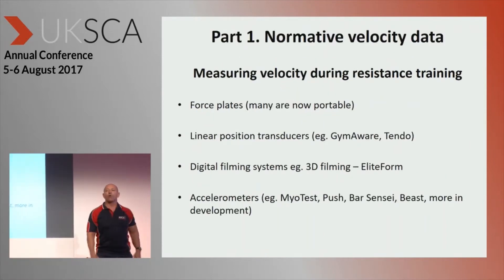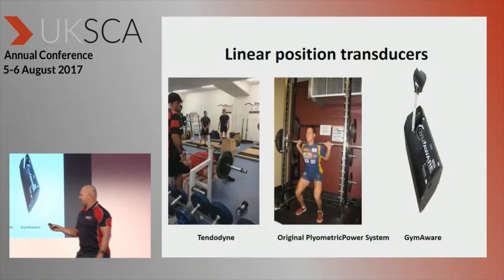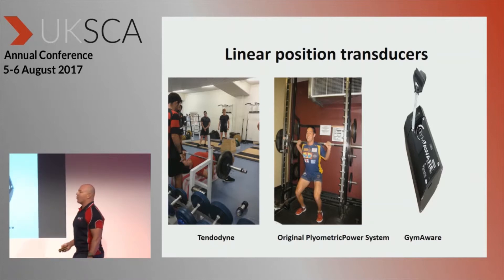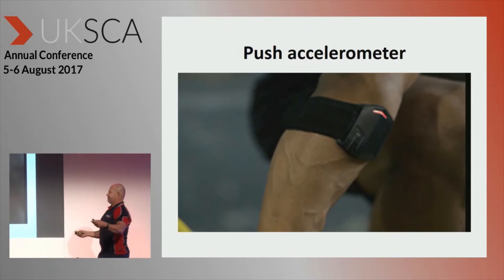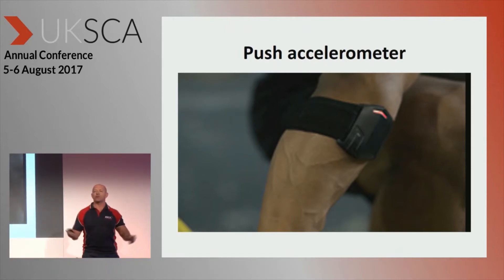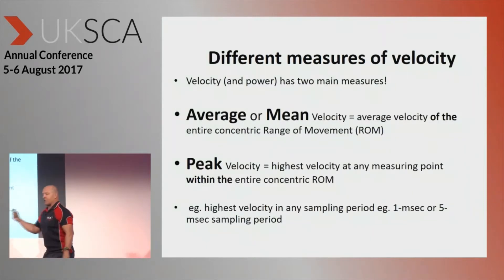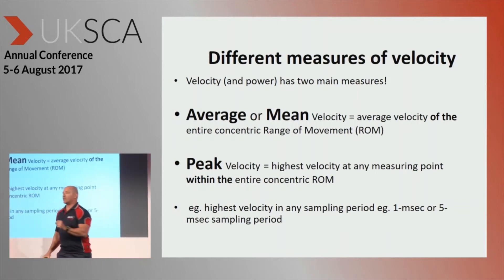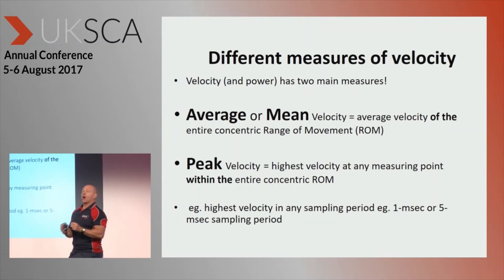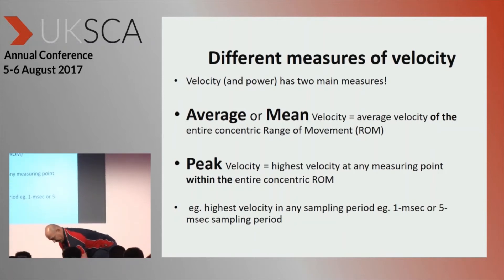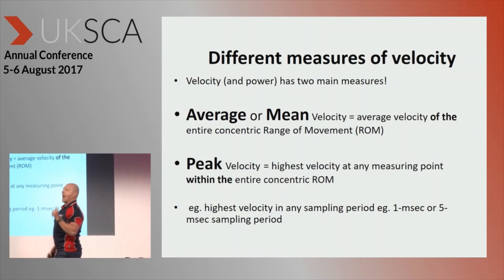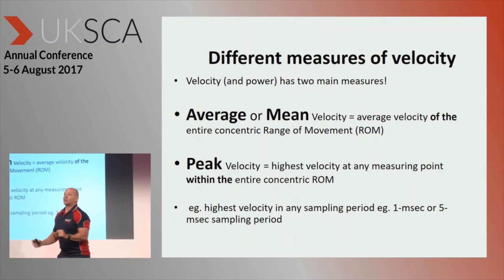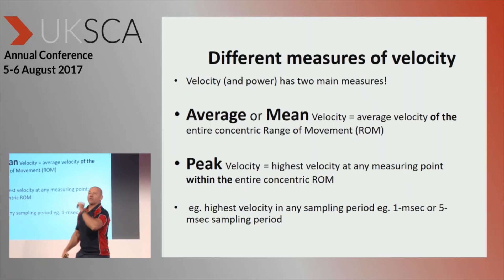How do we measure velocity? We've got four main ways: force plates, linear position transducers such as Tendodyne — that's the original plyometric power system — and Gymware. We can use 3D filming systems such as Elite Form, or accelerometers such as Push, Maya Test, Bar Sensei, Beast — there's a whole heap coming out. I'm not going to talk about which device you choose; make a choice. Once you've chosen your device, you concern yourself with what measure of velocity to use. Do you use average velocity or peak velocity? Average velocity is across the entire concentric range — for example on a deadlift, from start to finish. Peak velocity is the highest velocity at any point in the range of motion; on a jump squat or Olympic lift, you'll probably get your peak velocity just as the toes are about to leave the floor.